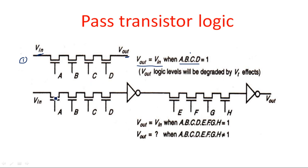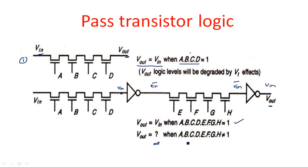Extending this further with an inverter: when A, B, C, D are all 1, V_in passes through and gets complemented to V_in_bar. Then when control inputs E, F, G, H are all 1, V_in_bar passes through and appears again as V_in at the output. So V_out equals V_in when all control inputs are at logic high, and V_out equals high impedance or open circuit when any control input is 0.